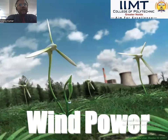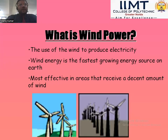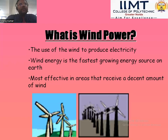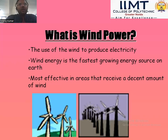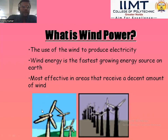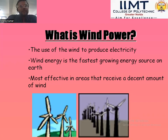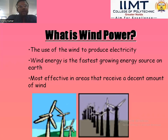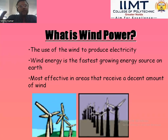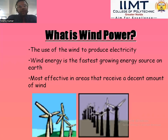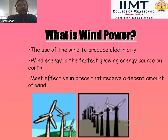Wind power converts kinetic energy into electrical energy. What is wind power? The use of wind to produce electricity. Wind energy is the fastest growing energy source on Earth, and is most effective in areas that receive a decent amount of wind. Wind turbines use three-bladed turbines that rotate using wind and a tower. The tower is connected to an electrical generator, and the turbines rotate the shaft of the electrical generator.